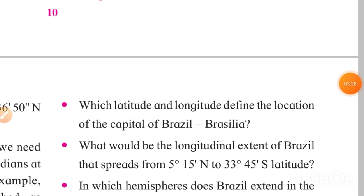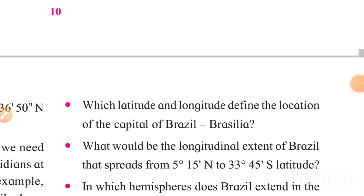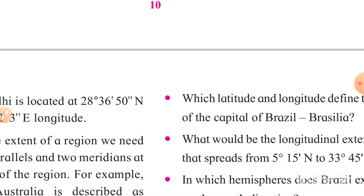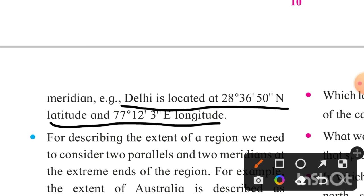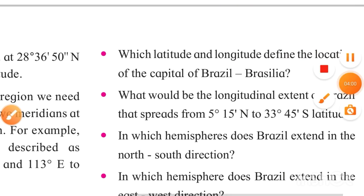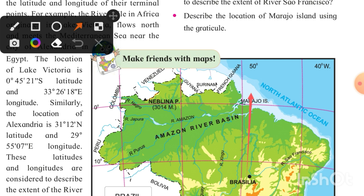Which latitude and longitude define the location of the capital of Brazil, Brasília? Like earlier we studied how to locate Delhi, which is the capital of India, we will follow the same procedure to locate Brasília. We'll draw the longitude — it doesn't exactly touch 50 degrees; 50 degrees is here, the pink line is 50.